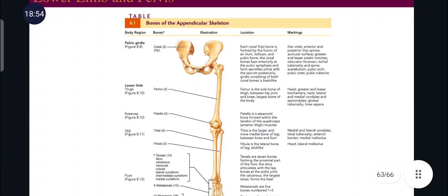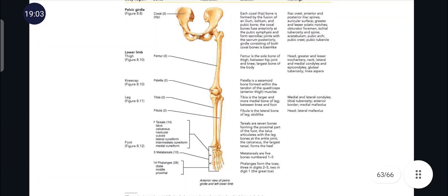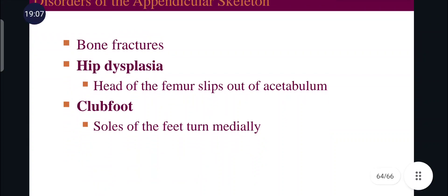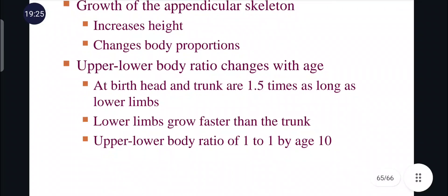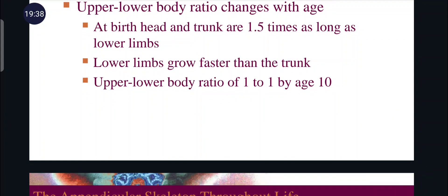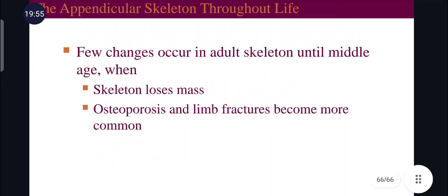This summarizes the bones of the lower limbs and pelvic girdle: pelvic girdle, lower limbs, kneecap, leg bones, and foot bones. Disorders of the appendicular skeleton include bony fractures, hip dysplasia — where the head of the femur slips out of the acetabulum — and club foot, where the soles of the feet turn medially. Regarding growth, the appendicular skeleton increases height and changes body proportions. At birth, the head and trunk are 1.5 times as long as the lower limbs, but lower limbs grow faster. By age 10, the upper-to-lower body ratio is 1 to 1. In middle age, the skeleton loses mass, and osteoporosis and limb fractures become more common in old age.